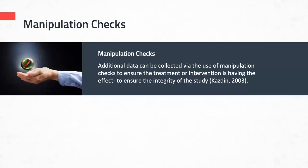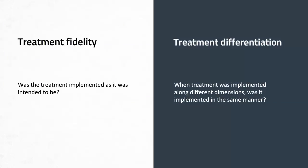There are a number of ways to ensure fidelity. One favorite approach is something called manipulation checks. The integrity of the manipulation or the implementation of the intervention is often assessed by determining what effect the independent variable had on the dependent variable. Additional data can be collected via manipulation checks to ensure that the treatment or intervention is having the intended effect — in other words, to ensure the integrity of your study. For example, was the treatment implemented as it was intended to be implemented?